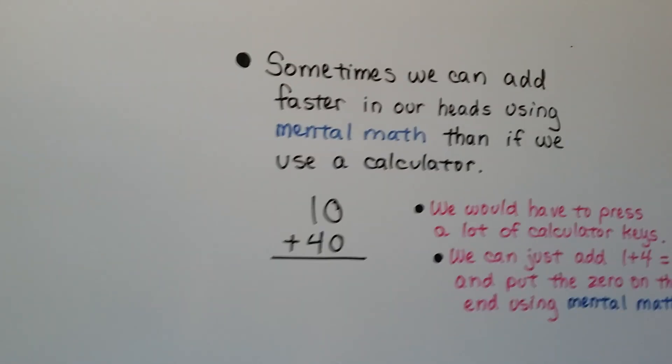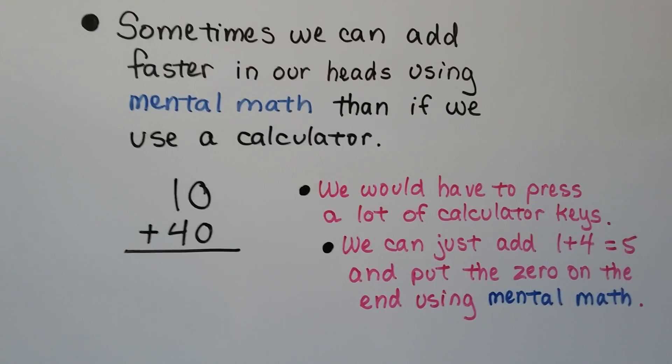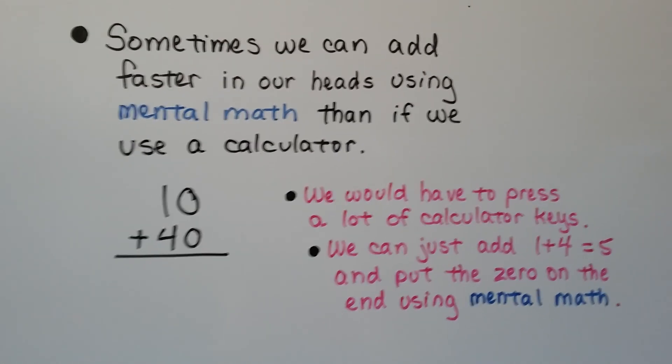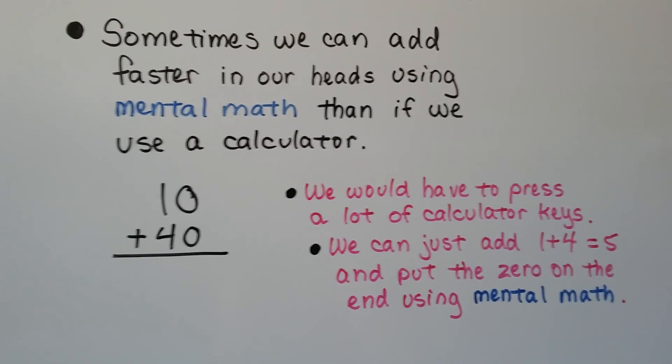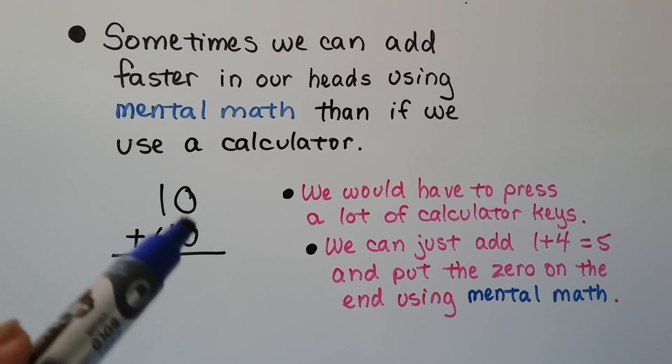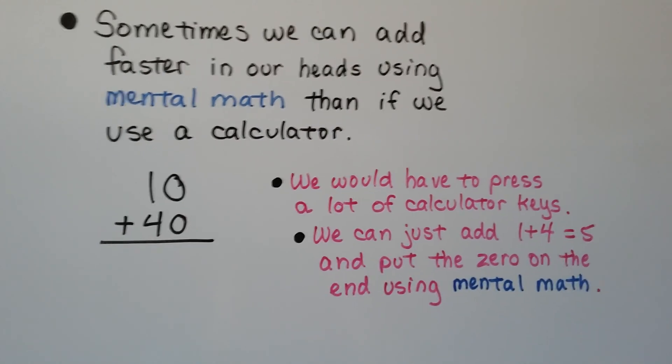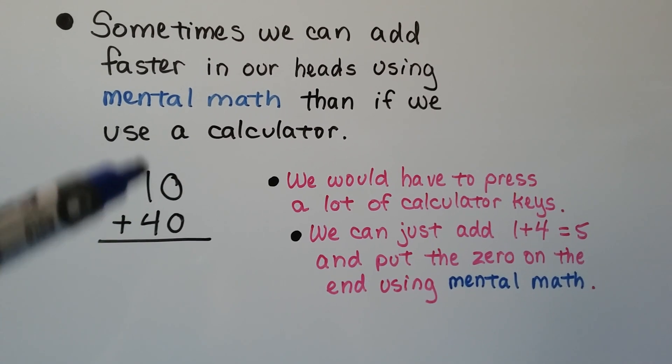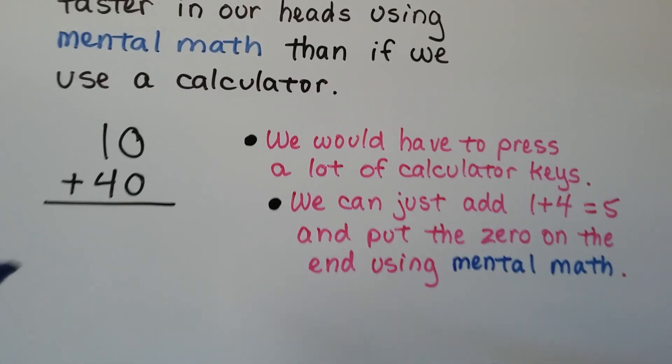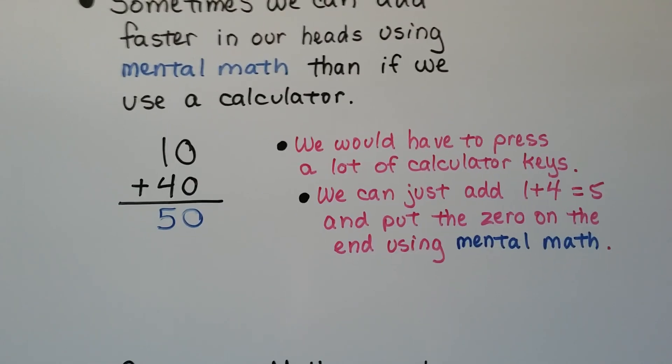Did you know that sometimes we can add faster in our heads using mental math than if we used a calculator? Would it be quicker to add this in our heads using mental math or a calculator? Well, actually, we would have to press a lot of calculator keys. We'd have to put in the 1, then the 0, then the plus sign, then the 4, then the 0, and it might show the answer right away, or we might have to push an equal sign. Well, by the time we push in all of those, we could just see 1 plus 4 is 5 with a 0, right? Mental math would be a lot faster.